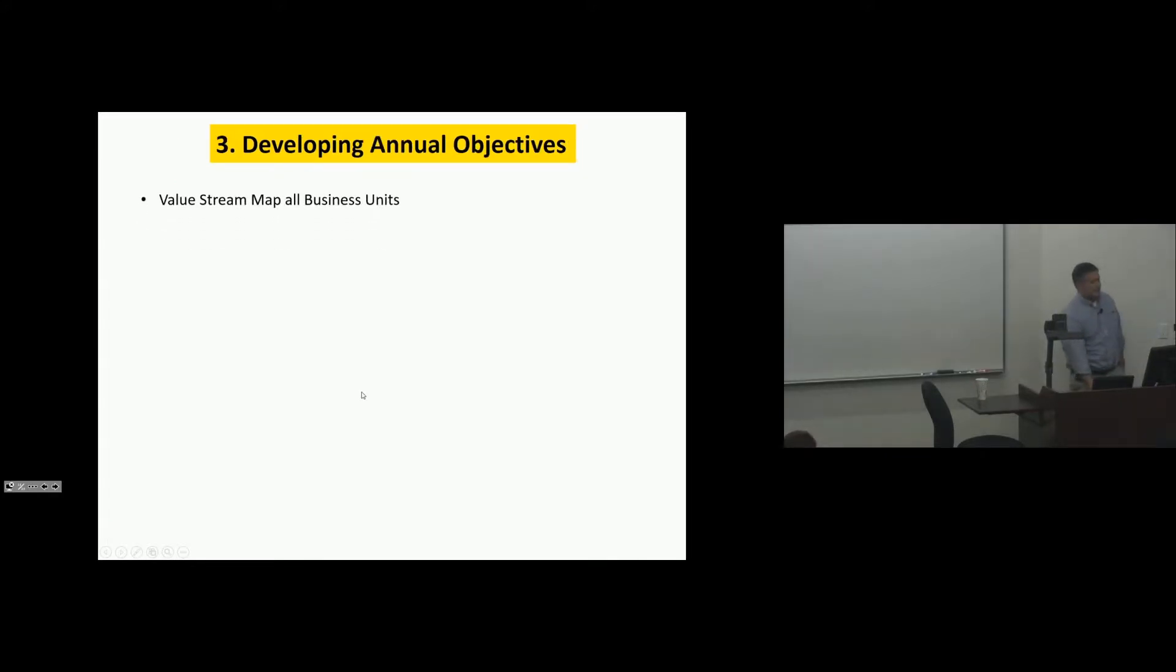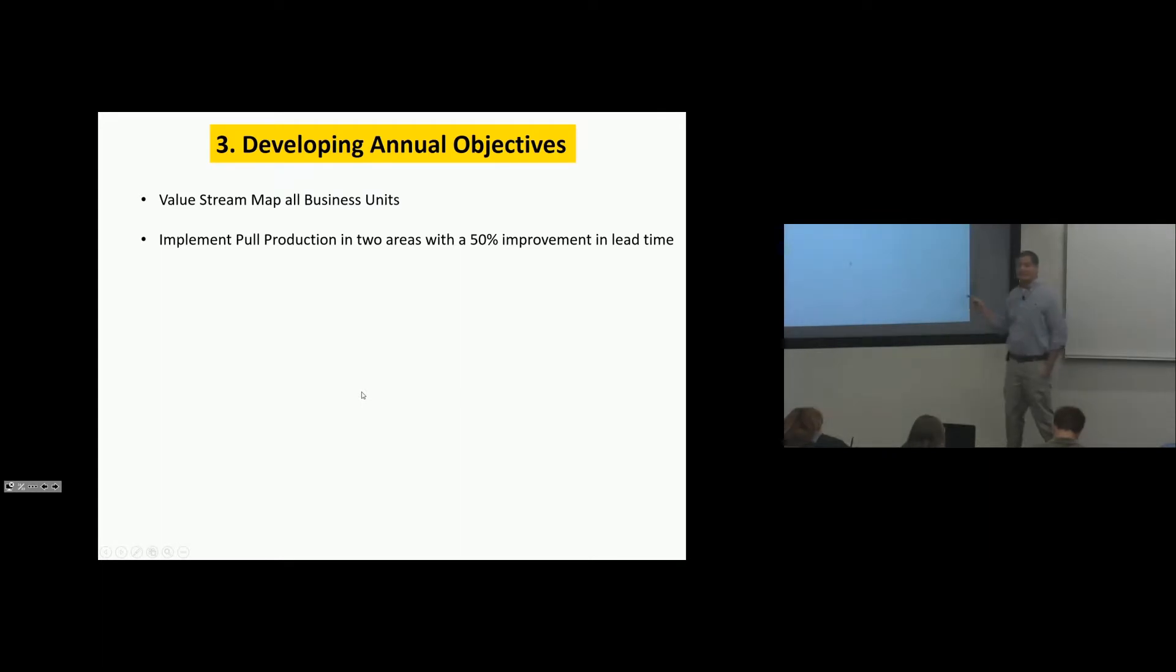So develop annual objectives. Value stream map all business units. There's 10 of them. Implement pull production in two areas with 50% improvement in lead time. They've done that. Crank case. They're supposed to do it with cylinders. Don't think they've done that yet. They're losing my influence, I think. I think they need me there.